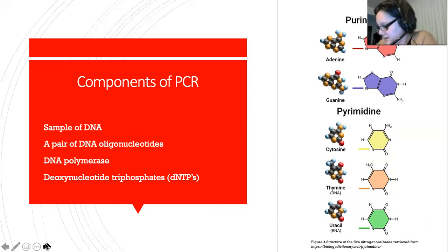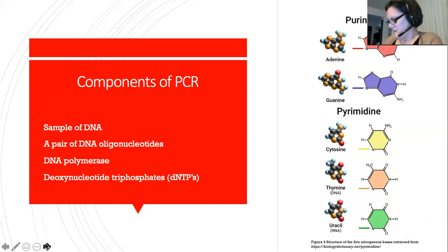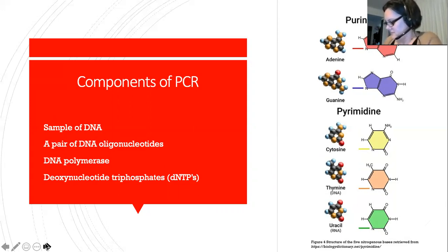DNA polymerase, which is the enzyme used to synthesise DNA molecules, has more recently been replaced with thermostable DNA polymerase, as it does not denature during heating. The purine bases adenine and guanine, and the pyrimidine bases cytosine and thymine are needed. These deoxynucleotide triphosphates are the key components to the structure of DNA and are needed to create new DNA.